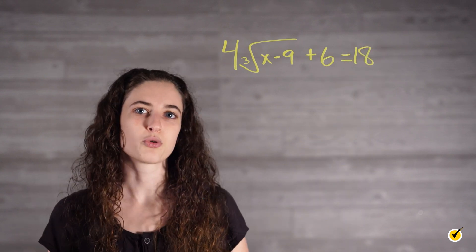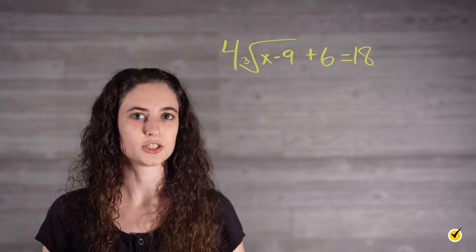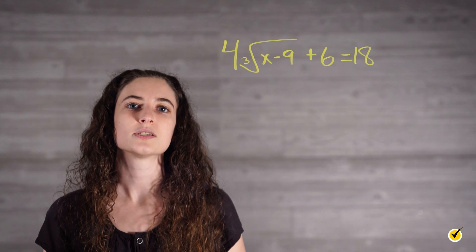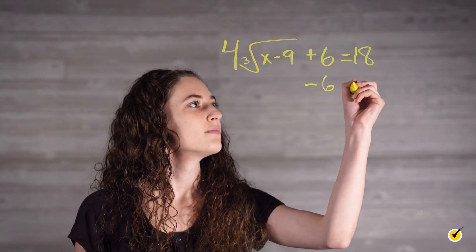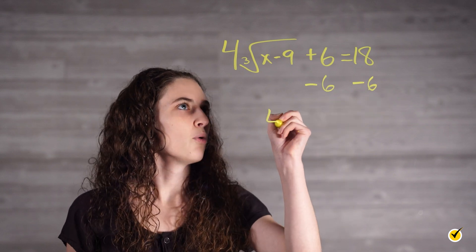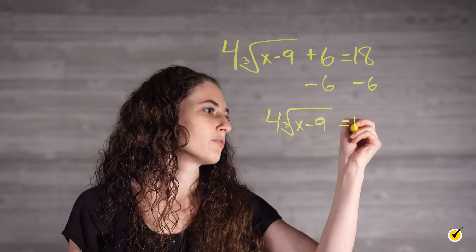If we go by the backward order of operations, we first have to get rid of all our addition and subtraction. So the first thing we do is subtract 6 from both sides. 4 times the cube root of x minus 9 is equal to 12.